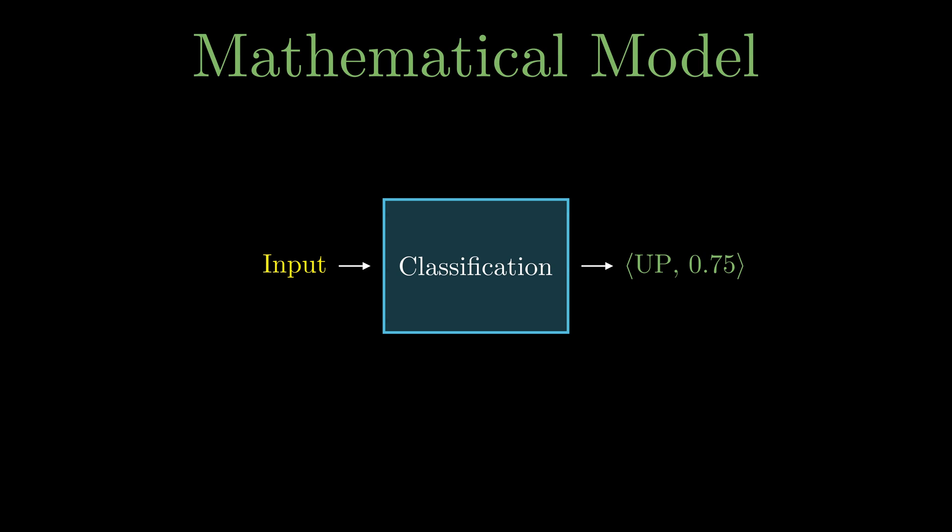Classification predicts what class it belongs to and gives a probability of it being in the class. For example, the model predicts it is going up with a 75% probability - this means it believes the price will go up with a 75% chance. It could also predict the price is going down - here the model predicts it is going down with an 80% probability.